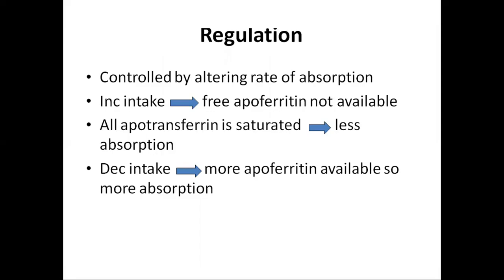How the level of iron in the body is regulated: it is controlled by altering the rate of reabsorption. Increased intake will lead to free apoferritin not being available, as all apotransferrin becomes saturated, so less absorption of iron will take place. When there is decreased intake in the diet, more free apoferritin will be available and apotransferrin is not fully saturated, leading to more absorption of iron.